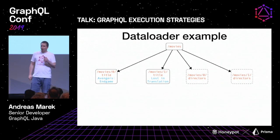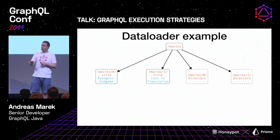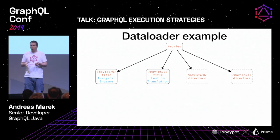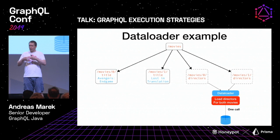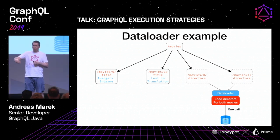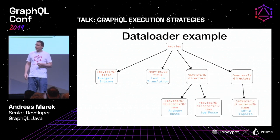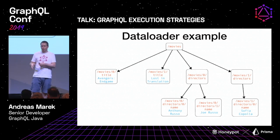Coming back to our example: how does a Data Loader implementation look? The execution strategy doesn't change. We reach the point where we want directors for two movies, and instead of making two calls, we delegate to Data Loader. Data Loader calls your custom loading code with both movies at once. You make one call, return the results, Data Loader feeds them back to the resolvers, and you get the same result tree. The n+1 problem is solved for this query — instead of 101 queries for 100 movies, you make just two.